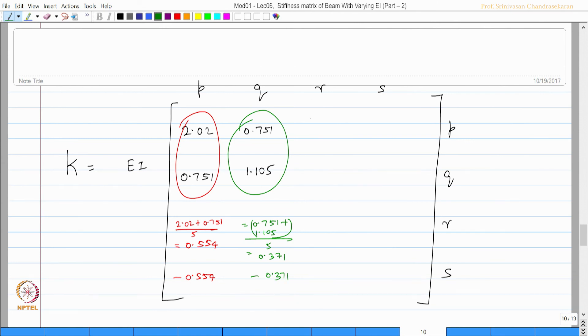Once I get this, I can find this value as sum of these two by 5, that is 2.02 plus 0.751 by 5, which will be 0.554. And this value will be 0.751 plus 1.105 by 5, which will be 0.371 by 5 again, which will be 0.185, and this will be minus 0.185.